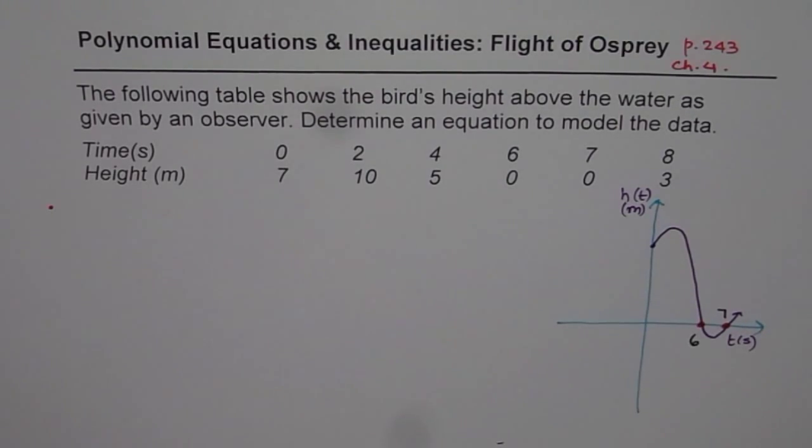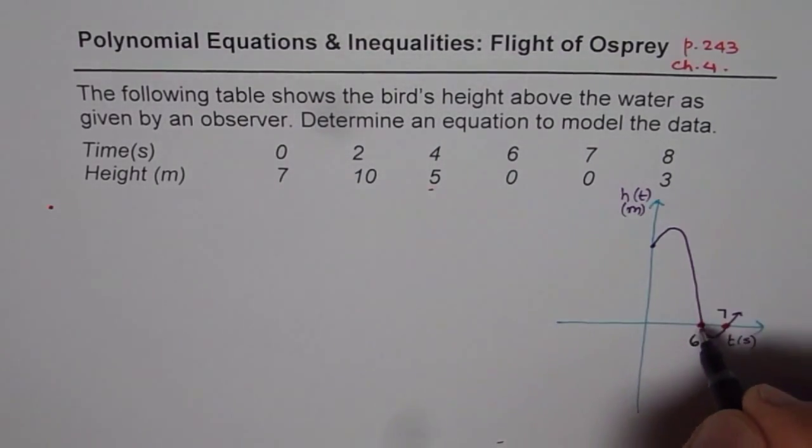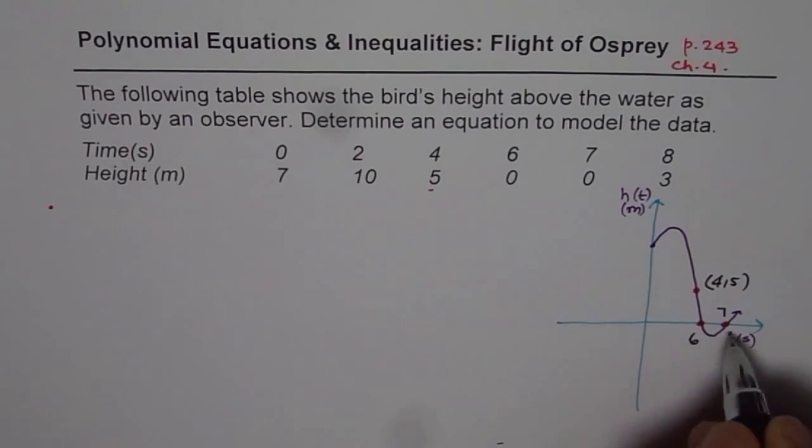0's at 6 and 7. So 6 seconds and 7 seconds we have 0's. Now these 0's will help us to find the equation of the polynomial. Another critical point is the y intercept and we can consider one more point. So I will prefer to use 4 and 5. So we will use these three points. This point for us is 4 and 5 and we have two 0's.